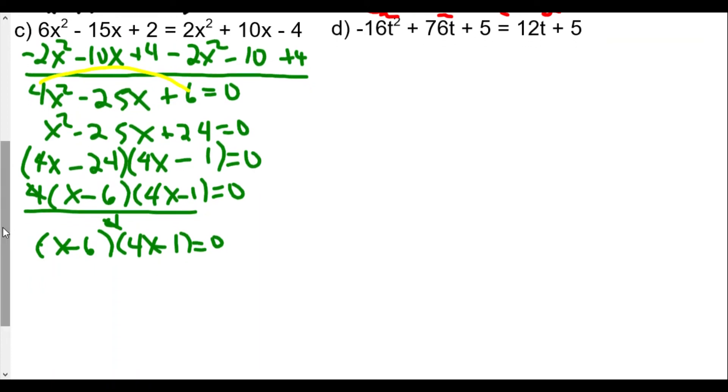In case you were wondering, will this work out? We can distribute. x times 4x is 4x², x times -1 is -x, -6 times 4x is -24x, and -6 times -1 is +6. We have 4x² - 25x + 6 = 0, which is exactly what we had from before.